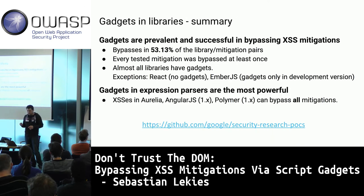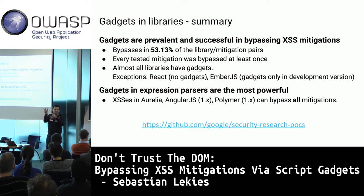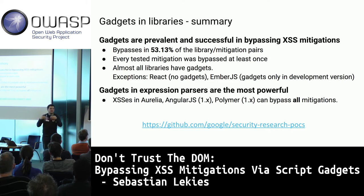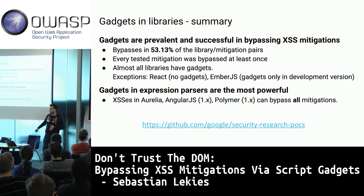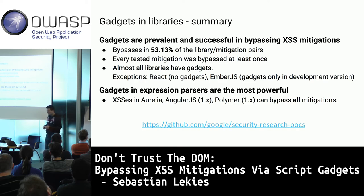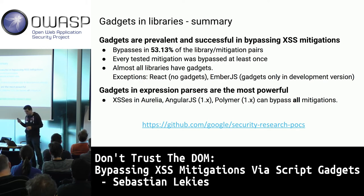So this was our library study. Combining all libraries and XSS mitigations, we were able to bypass in 53% of all cases. We always stopped at the first exploit, so there may be many additional bypasses. Expression-based gadgets are the most powerful and are very effective in bypassing all the mitigation techniques tested.